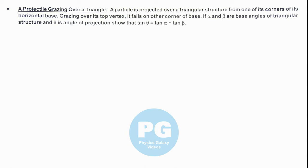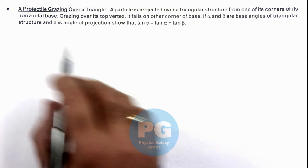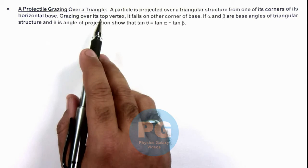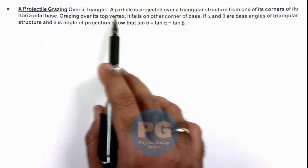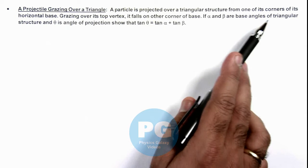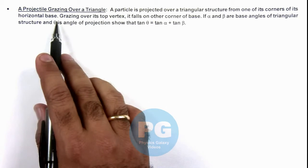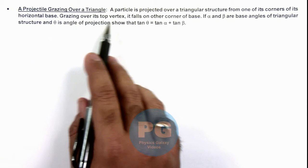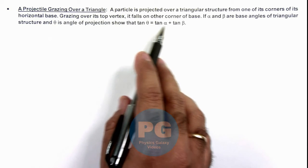In this illustration we'll discuss a situation when a projectile is grazing over a triangle. Here we are given that a projectile is projected over a triangular structure from one of its corners of its horizontal base.